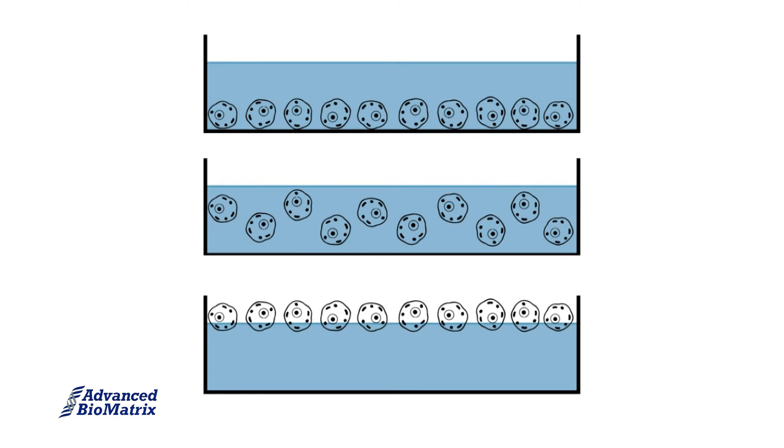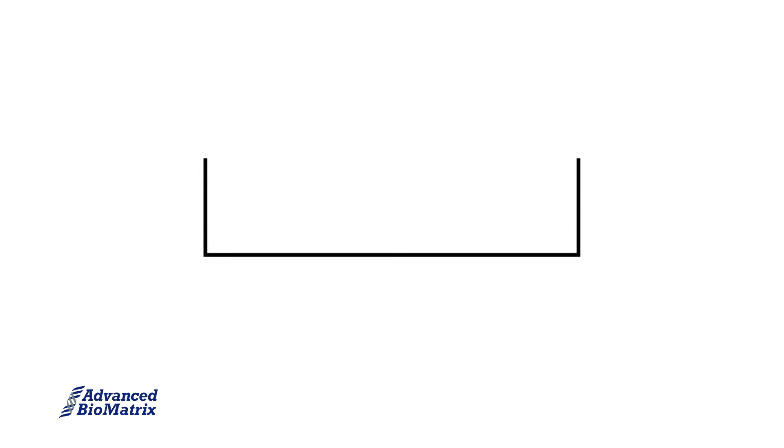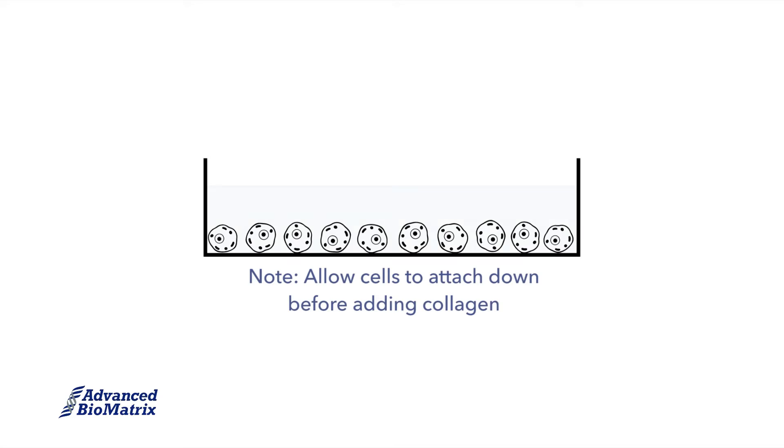There are three main ways to combine cells with collagen gels. First, dispense your cells into a dish, dispense the collagen on top, incubate, and you will form a very good gel over your cells.